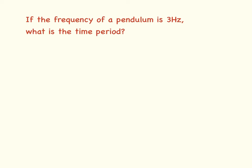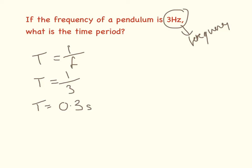So our first question is, if the frequency of a pendulum is 3 hertz, what is the time period? They've already told us that this is the frequency. Our equation is time equals 1 divided by frequency. So the time equals 1 divided by 3, which equals 0.3 seconds.